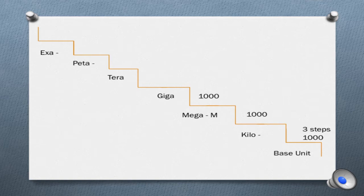Those same prefixes can be used for meters as well. Kilometers, megameters, gigameters, terameters, peta, and exa. But each step in this staircase is three steps or a thousand. A thousand kilometers is equal to one megameter.